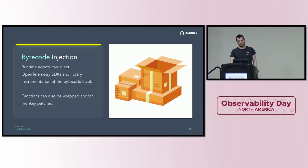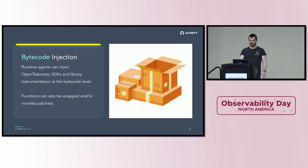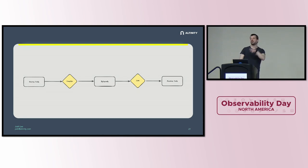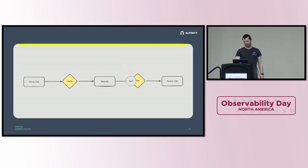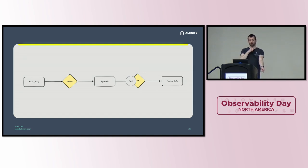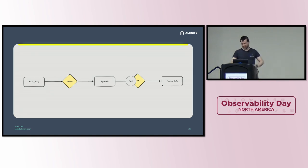Bytecode injection means function wrapping or monkey patching at the bytecode level. The source code gets compiled into bytecode, which is still kind of human-readable. An agent sits inside the JVM attached to the process you're trying to observe — it works similarly in .NET and Python — and it says: that's not the bytecode you're going to run, this is. Then it injects the SDKs.